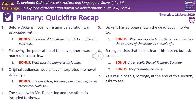That brings us to our plenary — quickfire recaps. On the screen you have seven questions to do with largely the two texts we've read today, with a few links backwards. Lots of those seven questions also have some bonus questions attached to them. Have a quick run through — you can either write down answers if that's useful, or simply do them in your head. When you've worked out what you think the answers are, press play again and I'll run through some possible responses.